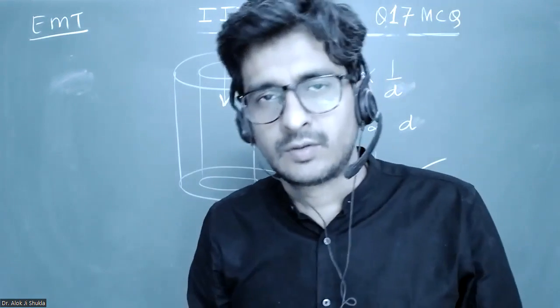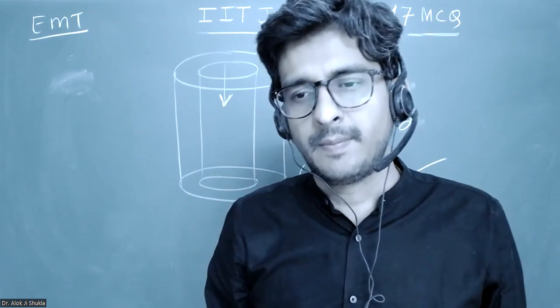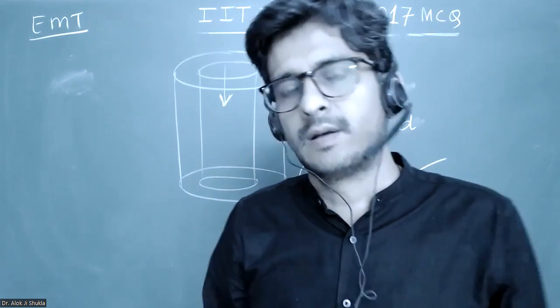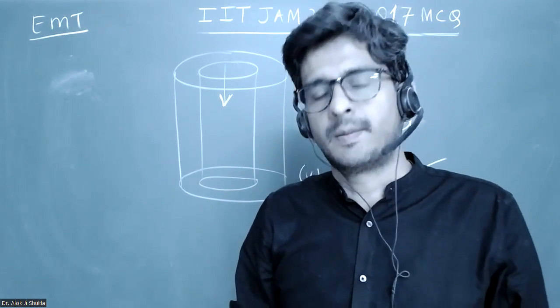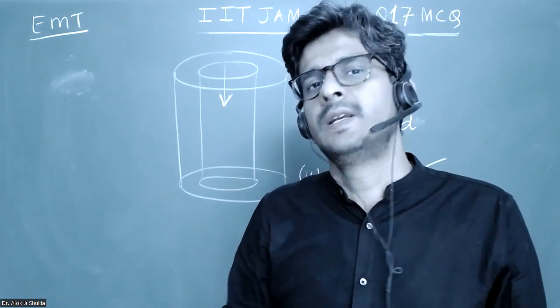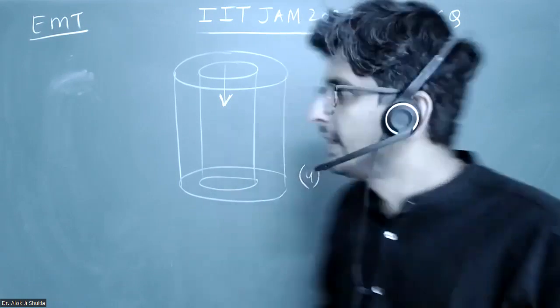If a magnet falls through a hollow copper pipe, there will be flux change with respect to the pipe because it is a copper or metallic pipe. So there will be induced current, and that induced current will oppose